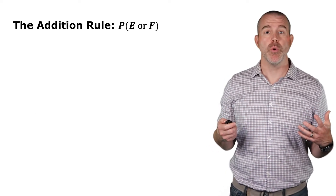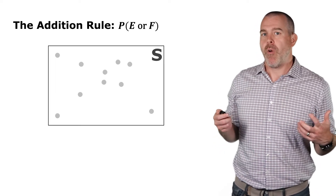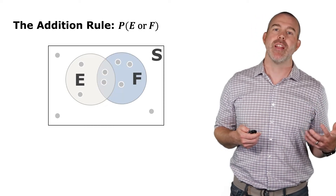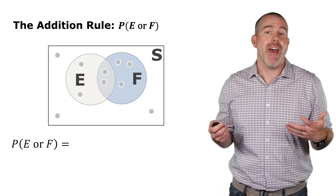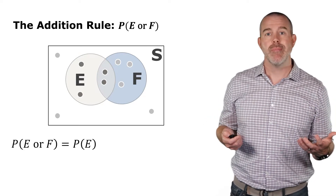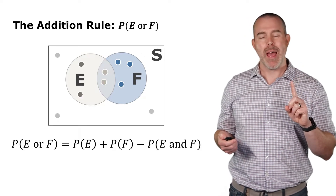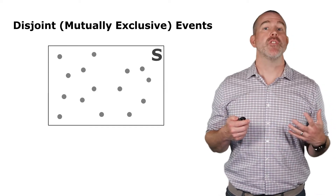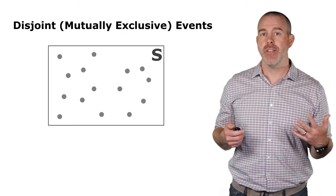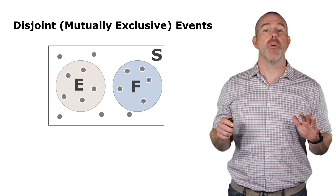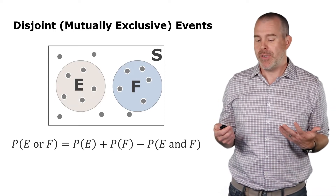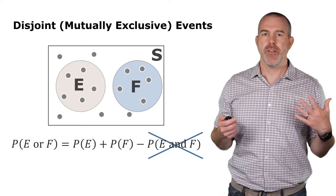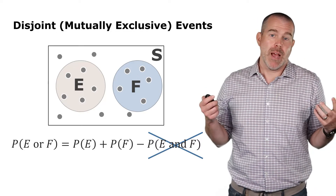We're going to have a variety of probability rules. The first one is the addition rule. Suppose all the dots represent the sample space, and I have event E with four different dots and event F with five dots. To find the probability of E or F, I find the probability of E and add the probability of F, but there's some overlap in the middle, so I need to subtract that overlap. If events don't overlap — that's called disjoint or mutually exclusive — then the probability of both E and F occurring is zero, giving a simpler rule. My recommendation: just remember the one general rule, and sometimes the probability of E and F will be zero.